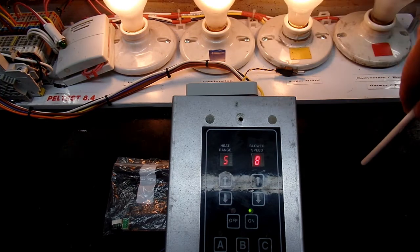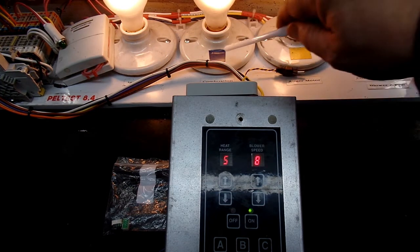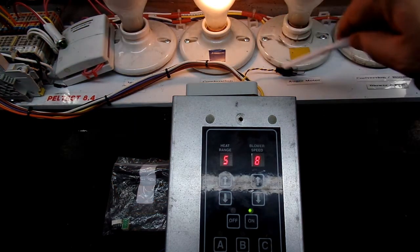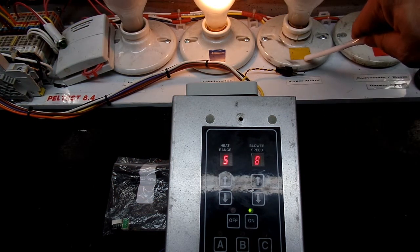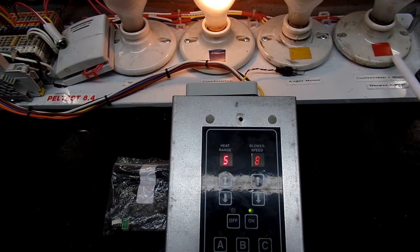I also have the combustion fan which is marked in blue and I have the auger marked in yellow. I do have the convection room fan as well which is not on.